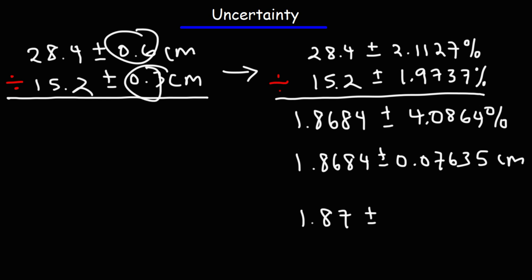Now, both uncertainty values, they only contain one significant digit. So we're going to round our uncertainty to one significant digit. So this is the first significant digit. The second one, it's a 6, so we're going to round the 7 up to an 8. So this is going to be plus or minus 0.08 centimeters. So that's our final answer, 1.87 plus or minus 0.08 centimeters.